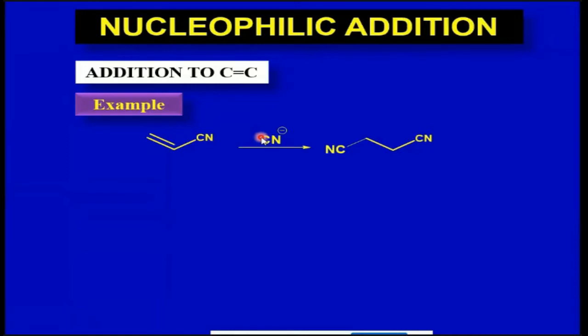We're going to react it with a cyanide anion. This nucleophile will attack one of the two positions, preferentially attacking here as we will see in the mechanism below, to give you this molecule.